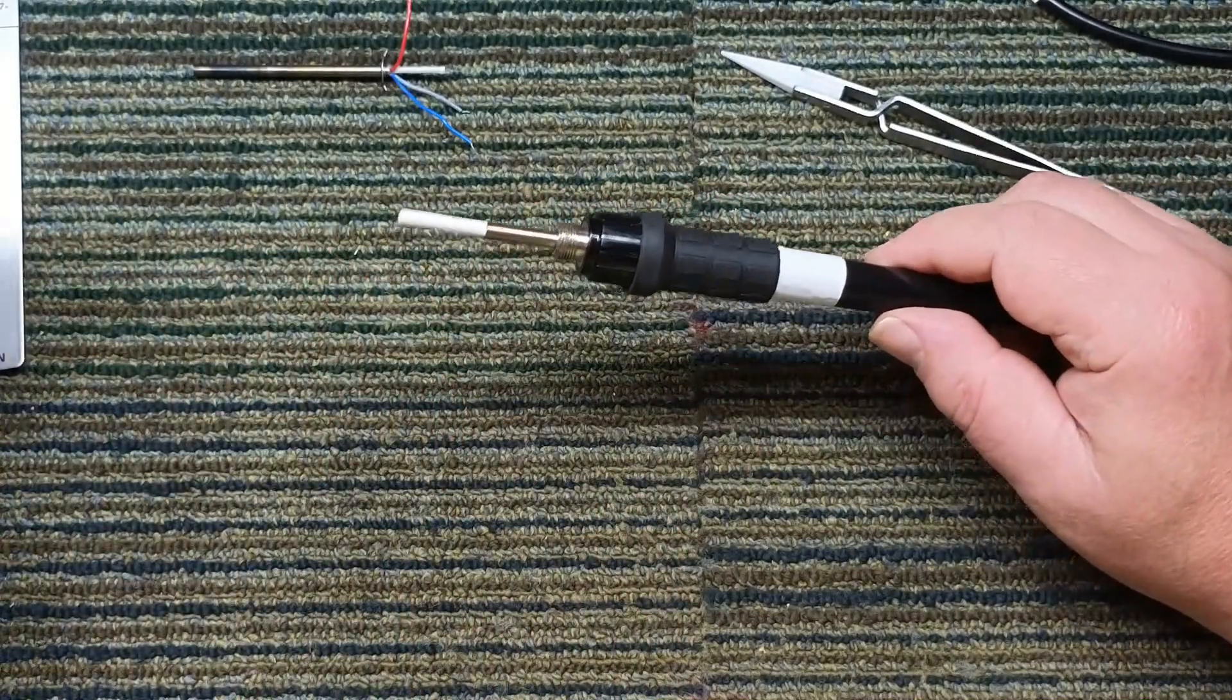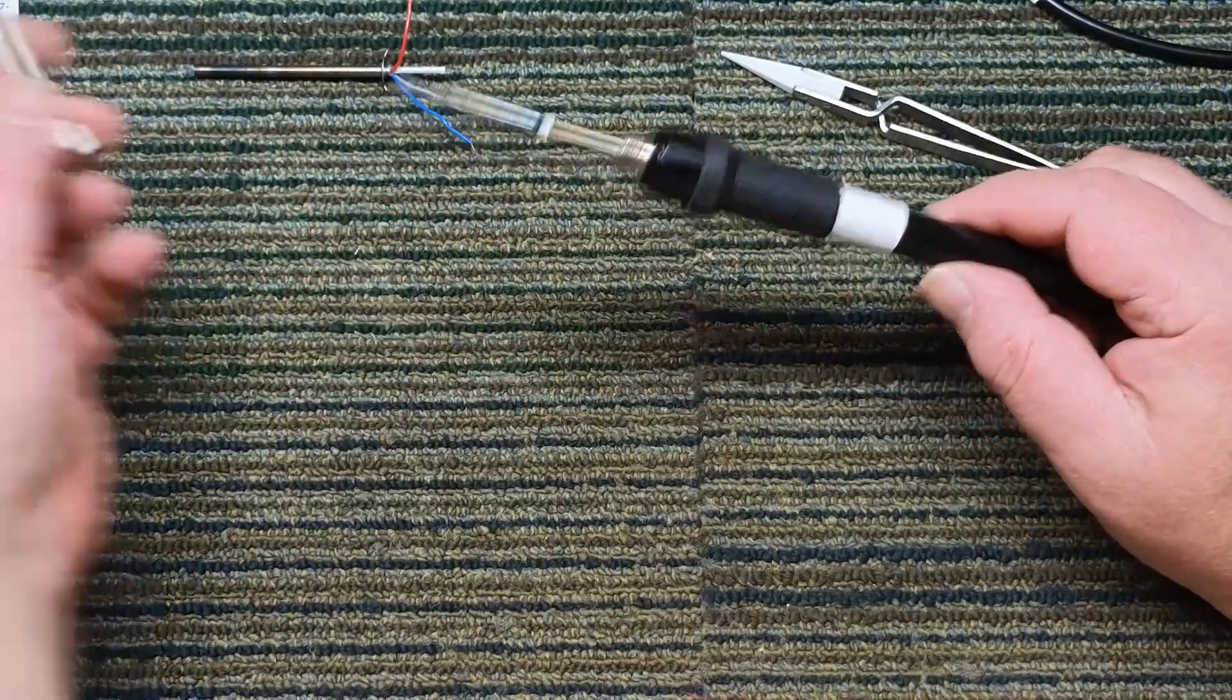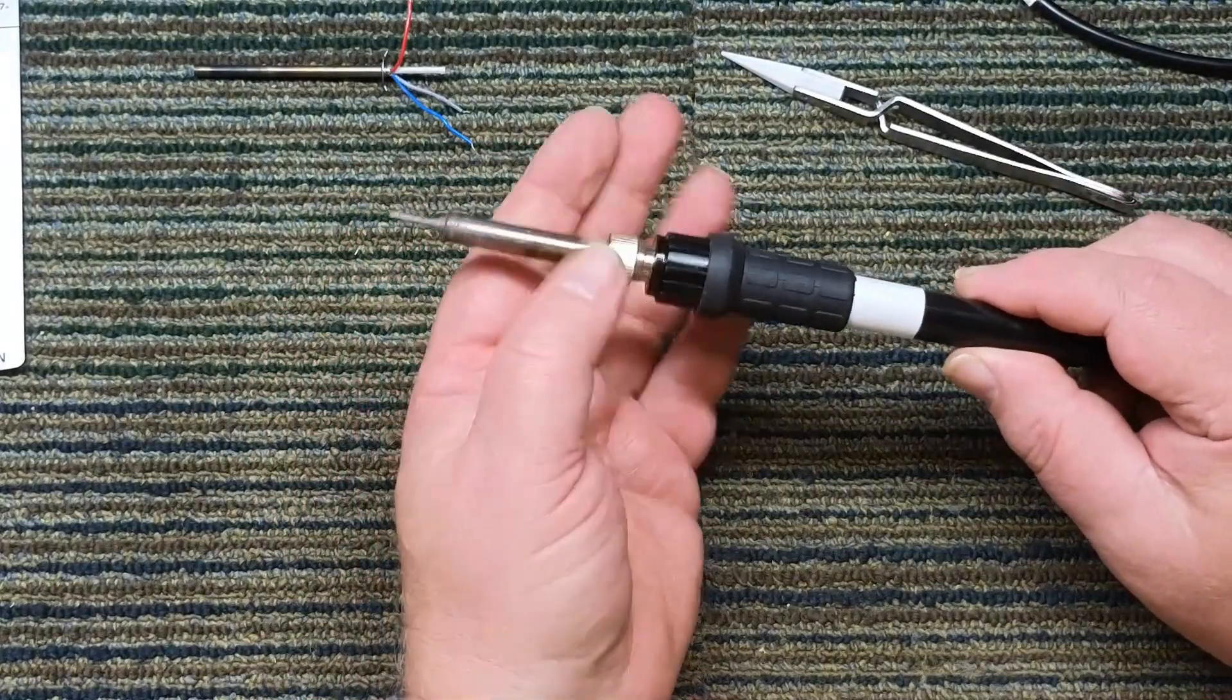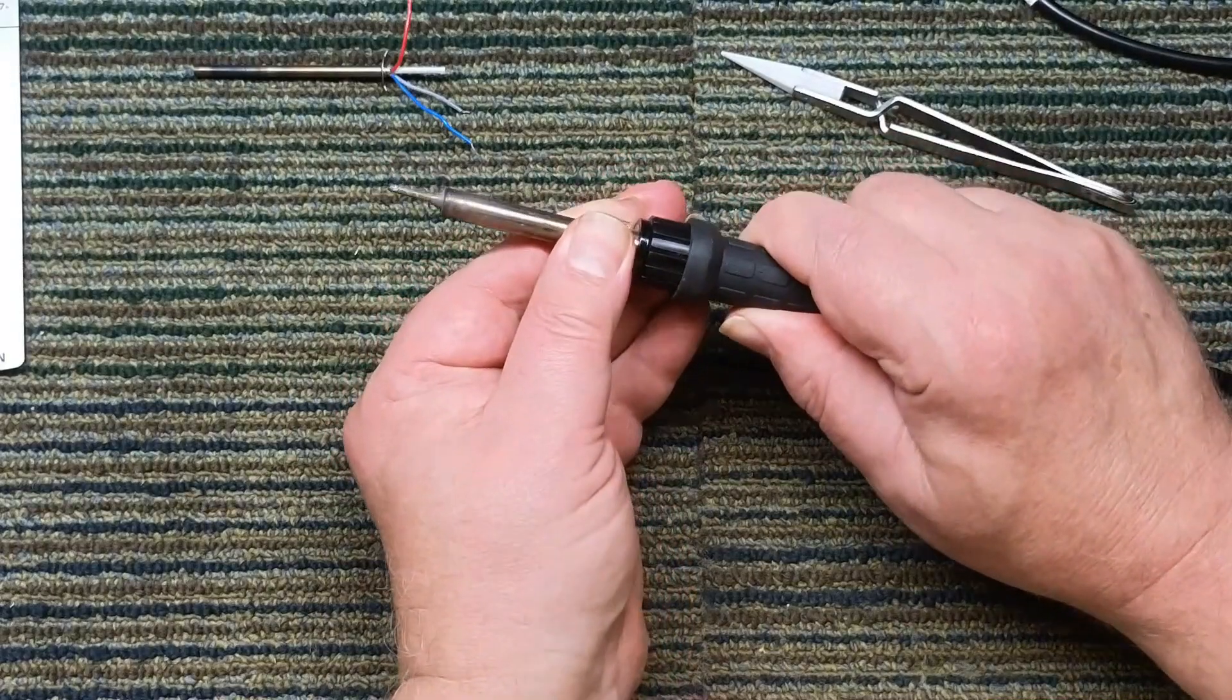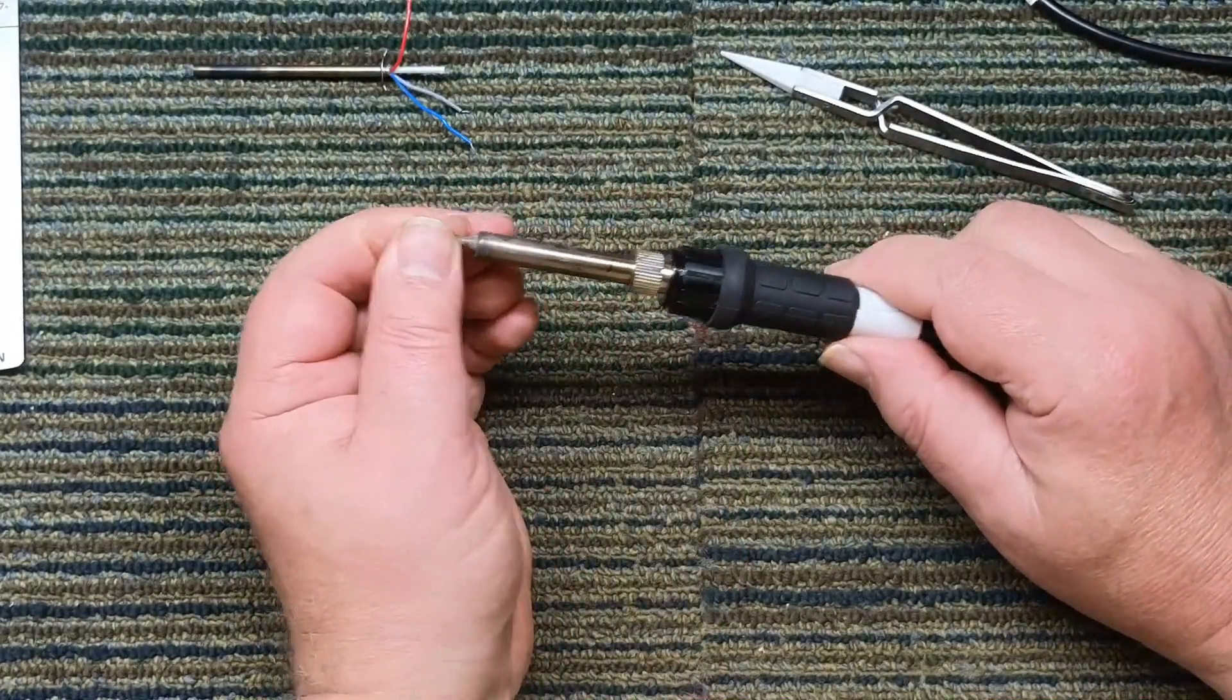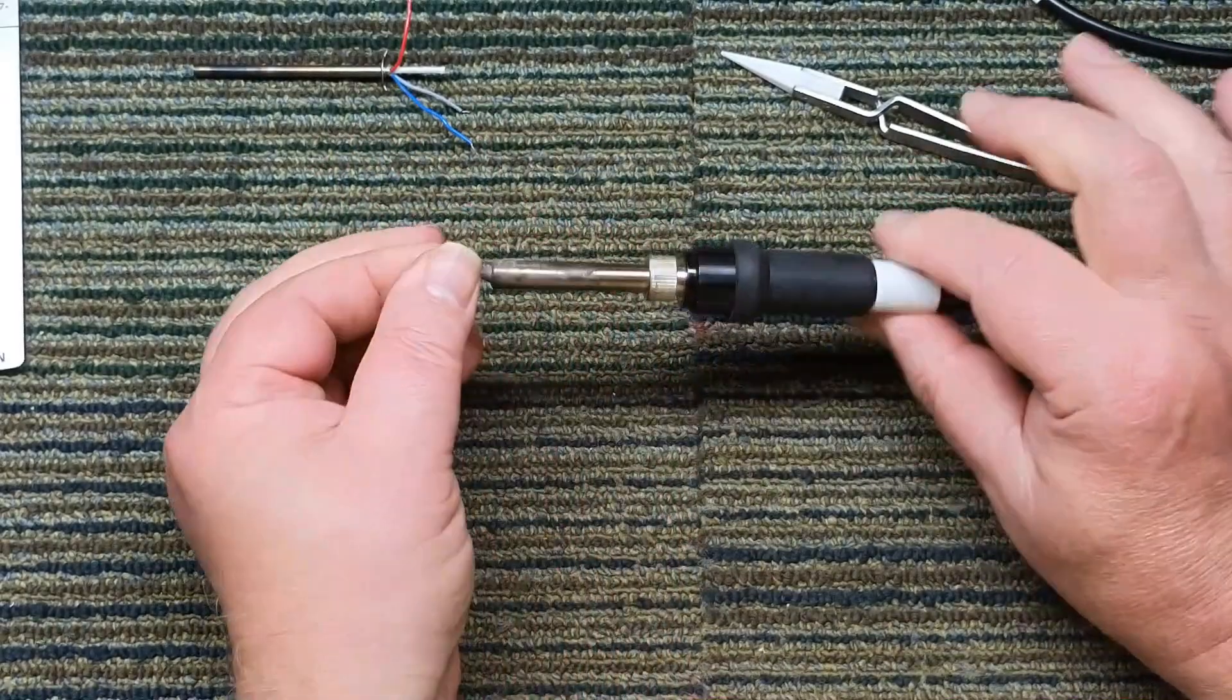Take your tip, put your tip on, slide that over, screw it down tight. Make sure, always make sure that this is tight because you won't be transferring your heat to your tip if this is loose. So this is good and tight.